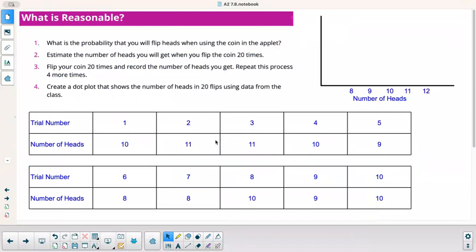Alright, the first activity. What is the probability that you would flip heads when using the coin in the applet? So the applet would be, if we were in class, I have this app that I would just, rather than actually physically flipping a coin, I would just press a button, and it would randomly generate a heads or a tails. So obviously, everybody should know there are two sides on a coin. So flipping heads, you'd have one favorable chance out of two total sides. So when you flip it 20 times, in theory, you should get 10 heads and 10 tails. That doesn't always happen, but 10 would probably be your measure of central tendency. If I did a bunch of different trials, 10 would probably be the most common number. Sometimes I might get 11, sometimes I might get 9. Flip your coin 20 times and record the number of heads you get. Repeat this process four more times.